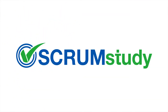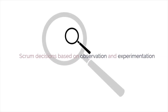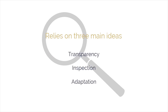Welcome back to Module 2, Scrum Principles. In this session, we'll see how decisions are made in Scrum and what the three main characteristics of Empirical Process Control are. In Scrum, decisions are based on observation and experimentation rather than on detailed upfront planning. Empirical Process Control relies on three main ideas of transparency, inspection, and adaptation. We'll now discuss these three main ideas with the help of a few diagrams.